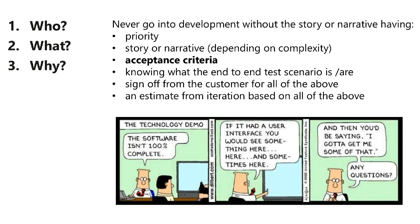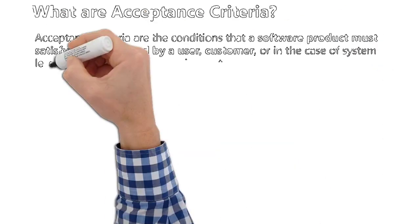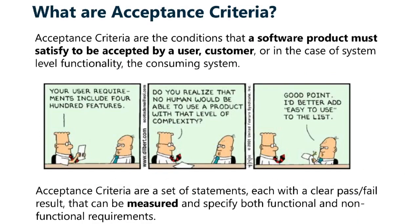As you can see in the cartoon strip attached here, if you don't have acceptance criteria clearly mentioned, it becomes very hard. If you don't ask questions, it becomes very hard to go ahead and understand the concepts. So now we come to the question: what are acceptance criteria? Acceptance criteria are the conditions that a software must satisfy to be accepted by a user or customer. Until it satisfies those conditions, it will never be accepted — that is the main definition of acceptance criteria.